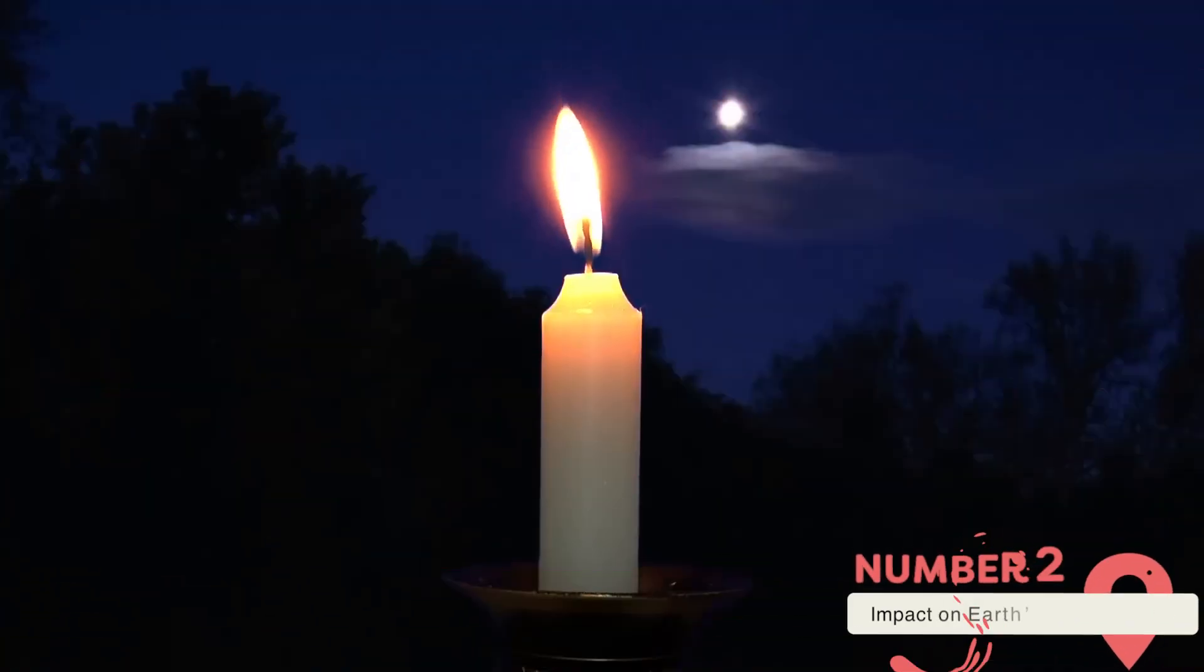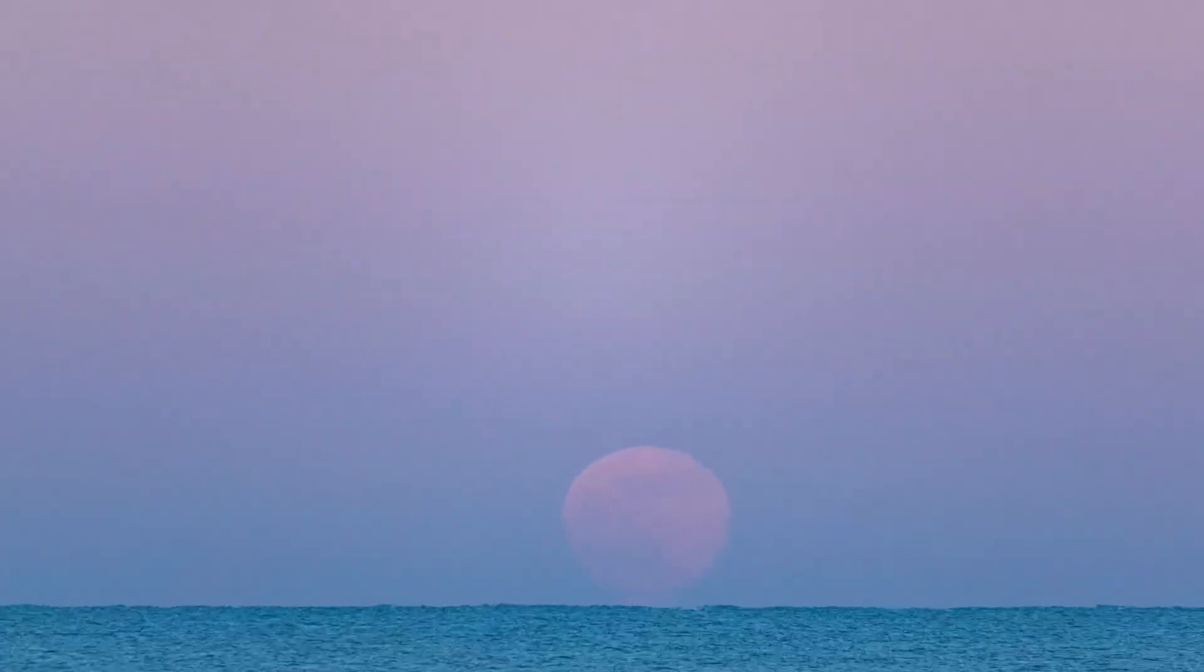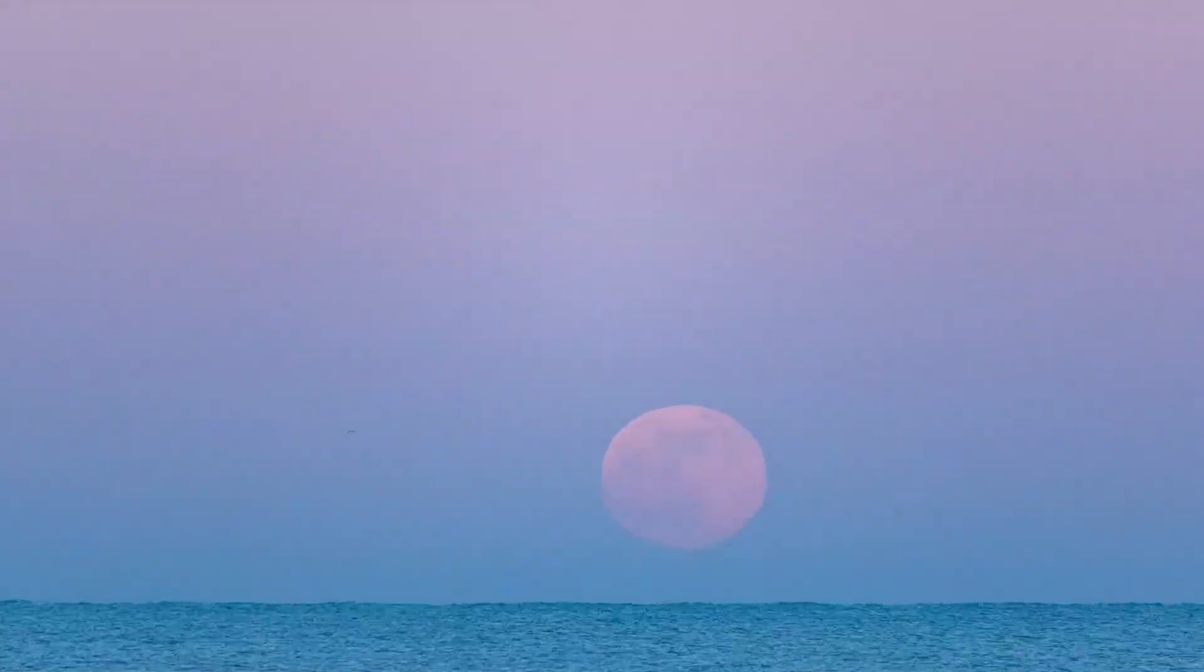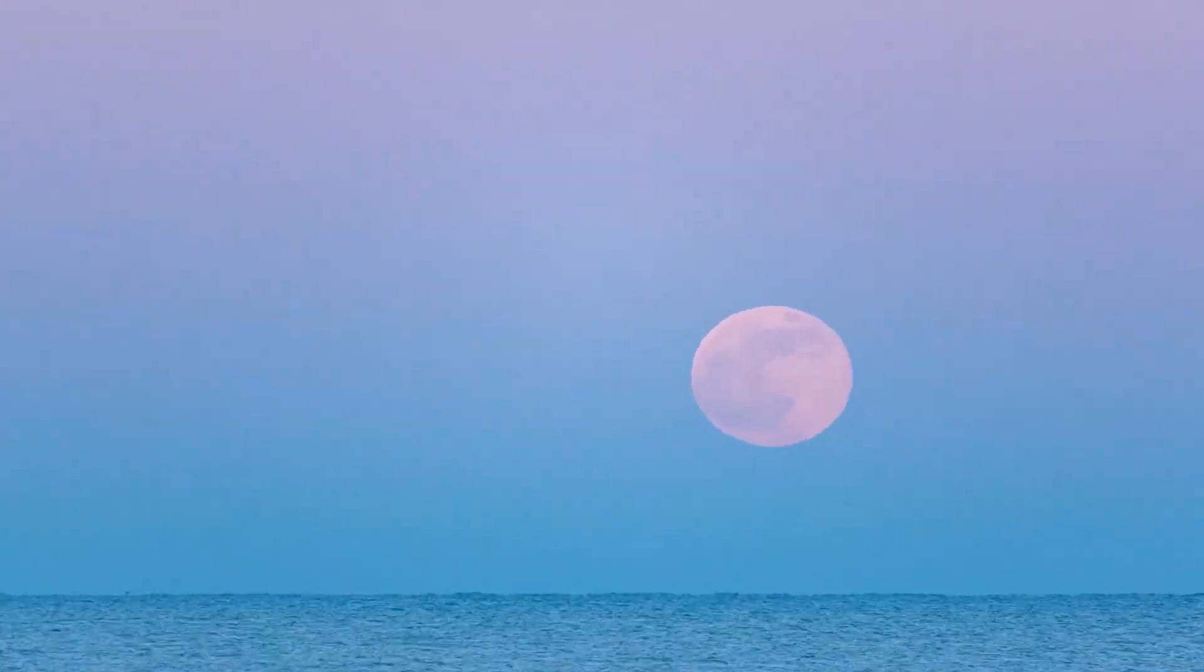Impact on Earth's climate and life. The Moon's influence on Earth goes far beyond simply lighting up the night sky. Its gravitational pull is responsible for ocean tides, which play a crucial role in shaping coastal ecosystems and regulating ocean circulation patterns. As the Moon moves further away, these tidal effects will gradually diminish.